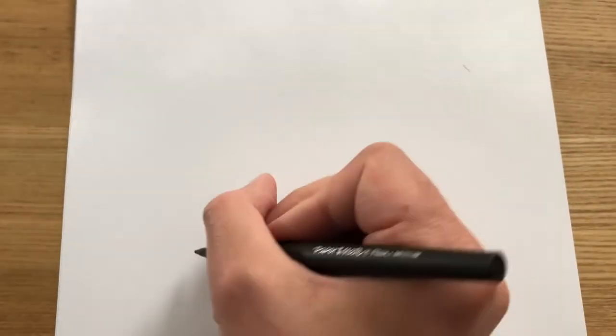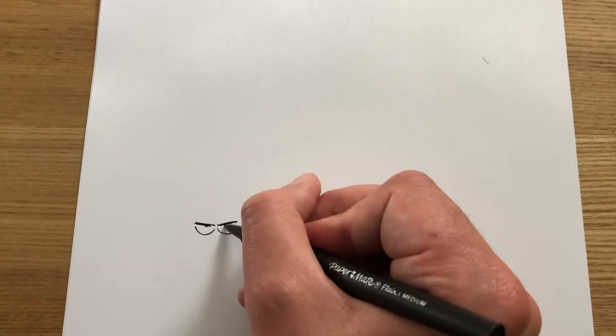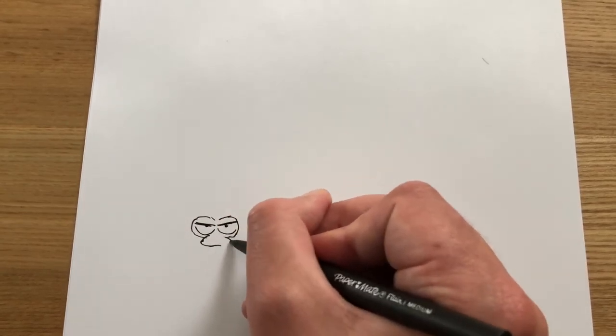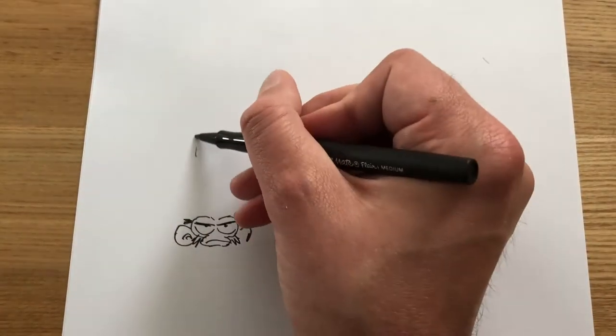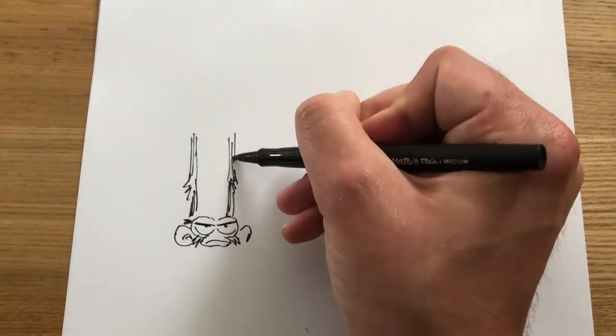When I draw with a fine pen, my drawing automatically gets smaller and a bit more detailed. Here you can see me doing a quick sketch of chimpanzee with a fine pen.